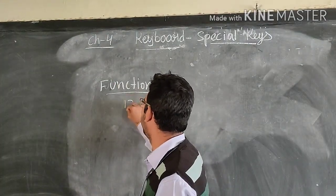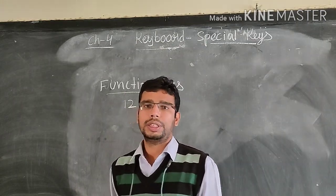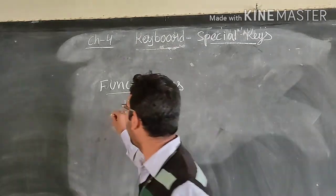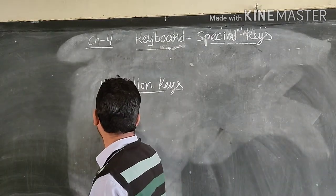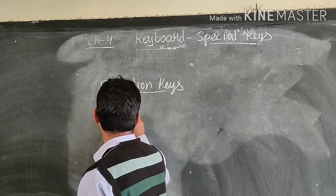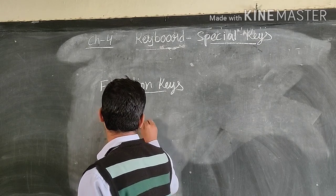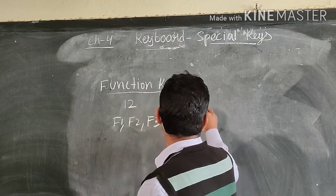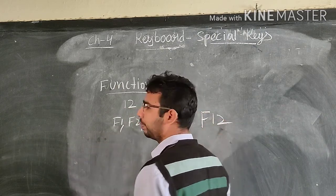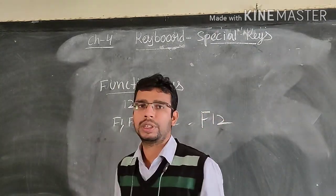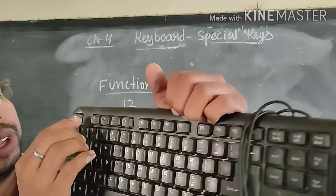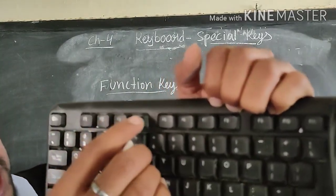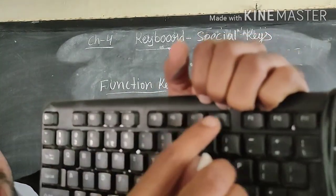How many function keys are there? 12. They are named F1, F2, F3, all the way up to F12.